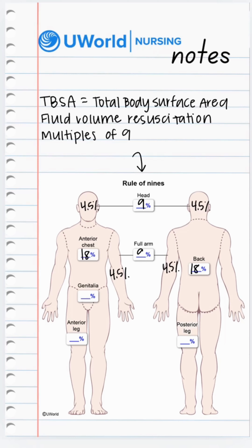The front of our leg is 9%, the back of our leg is 9%, so a full leg front and back is 18%. Genitals are 1%. Add this together and you get 100%.